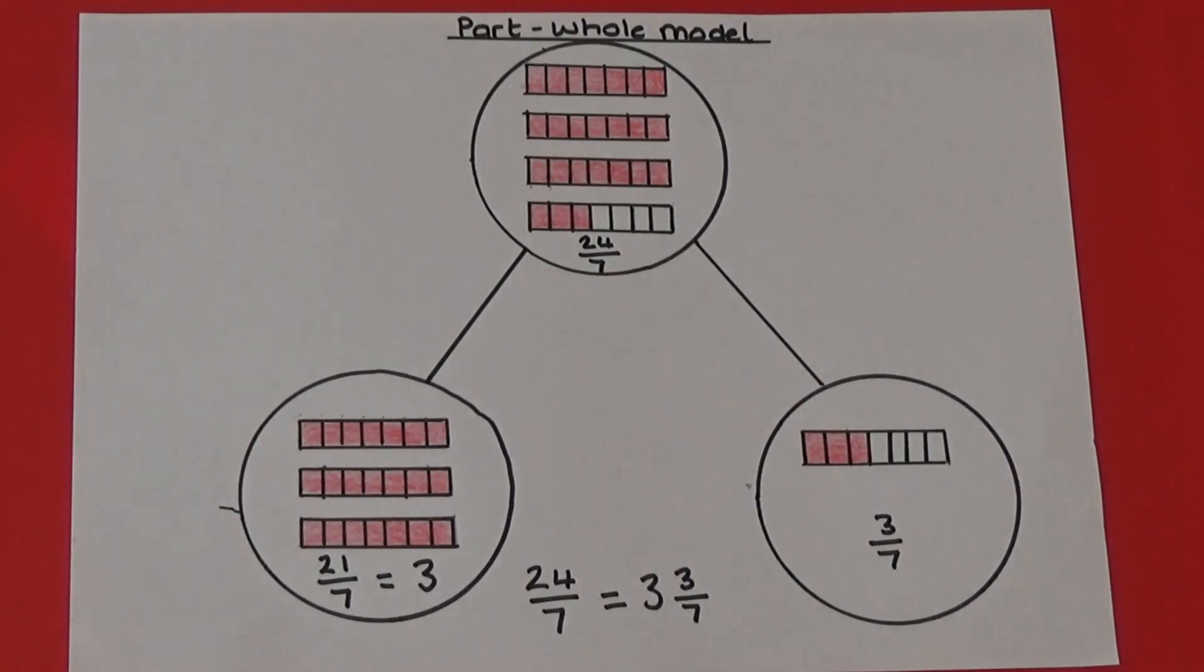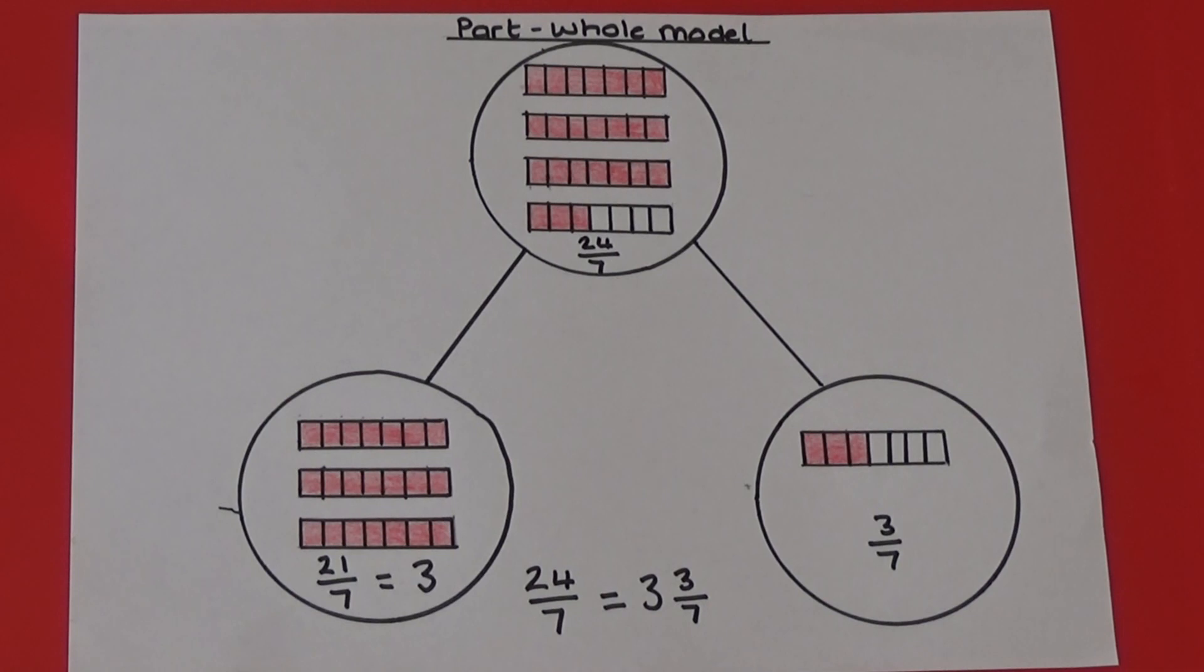From our part-whole model we can see we have 24 sevenths altogether. 24 sevenths are 3 wholes and 3 sevenths.